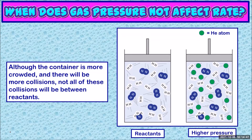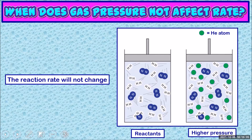The container is more crowded, so there will be more collisions between the gas molecules. However, not all the gas molecules in the container are reactants — some are the inert gas. Some of the collisions will be with the helium atoms. The rate of collisions between reactant molecules doesn't actually increase. If the rate of collisions between reactants is the same, then nothing will happen to the reaction rate.